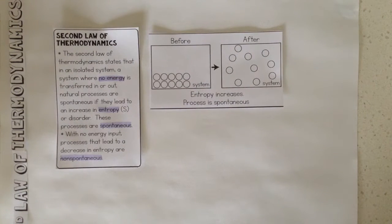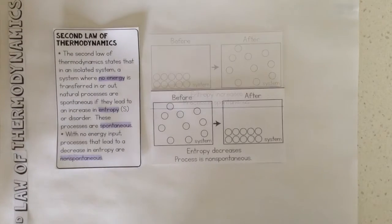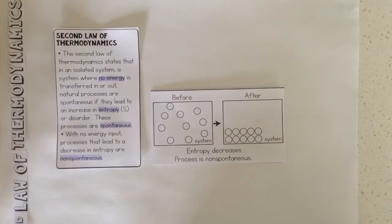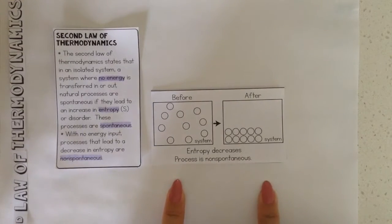The second law of thermodynamics states that in an isolated system, a system where no energy is transferred in or out, natural processes are spontaneous if they lead to an increase in entropy or disorder. These processes are spontaneous. With no energy input, processes that lead to a decrease in entropy are non-spontaneous.